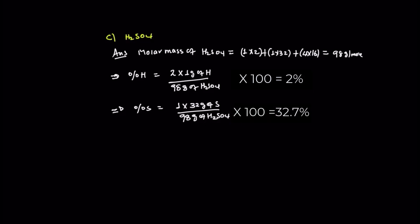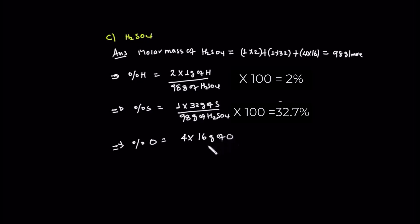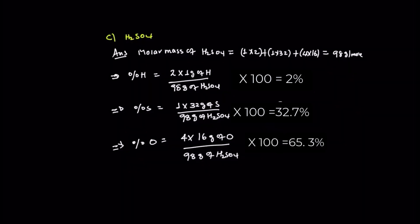The oxygen percentage: 4 times 16 grams of oxygen divided by 98 grams of sulfuric acid. This is the answer — the percentage composition of hydrogen, sulfur, and oxygen in sulfuric acid.